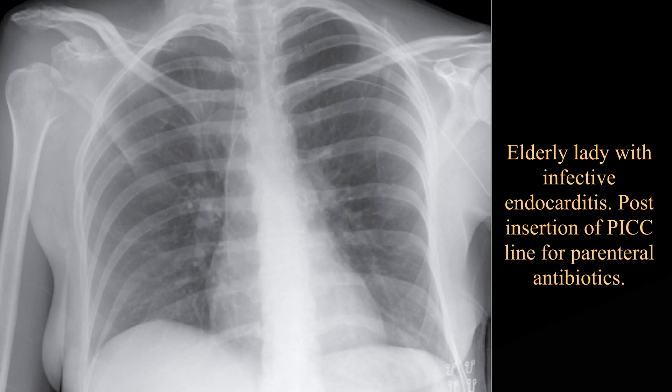There is inferior subluxation of the right humeral head. An ill-defined region of lucency is seen in the inferomedial aspect of the humeral head. There is an apparent bony fragment within the joint.